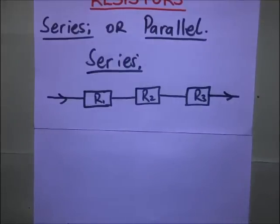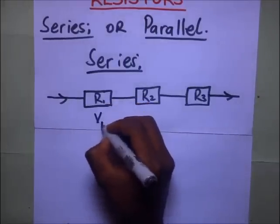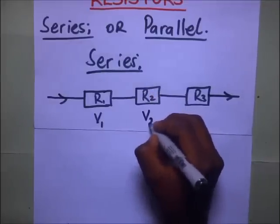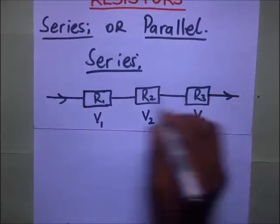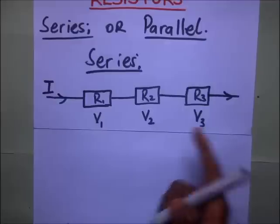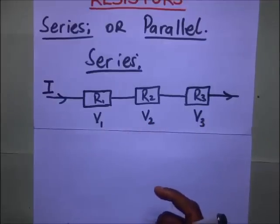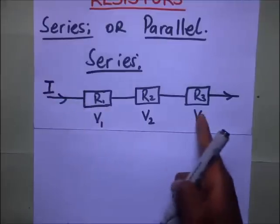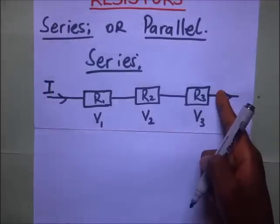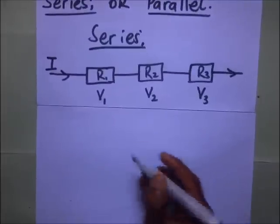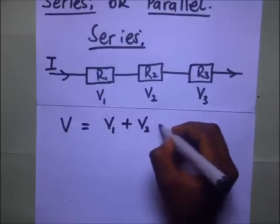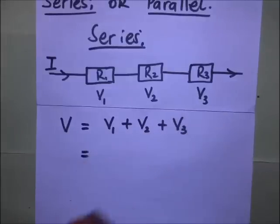Same current going through them but different potential drops — so the voltage across resistor one will be V1, the potential drop across resistor two is V2, and the potential drop across resistor three is V3. They all have the same current I going through. Since they have different potential drops across them, to get the total voltage or total potential drop between one end and the other, it is going to be V1 plus V2 plus V3.